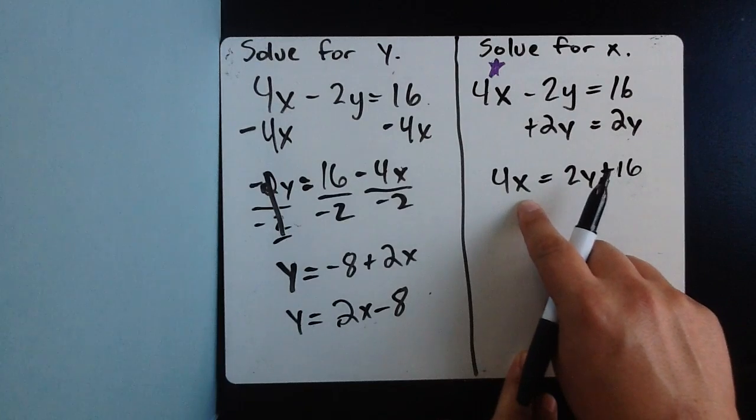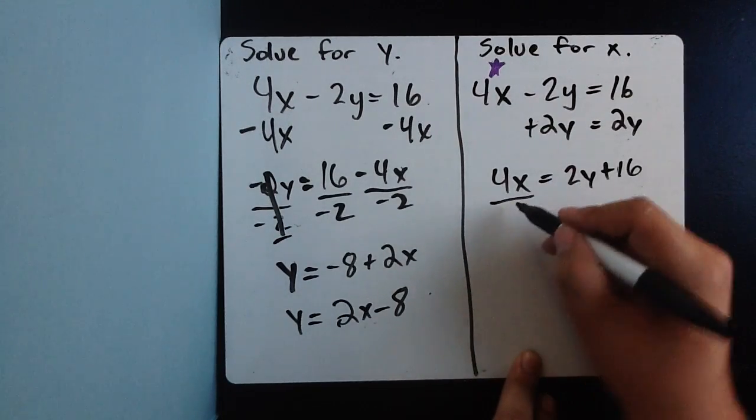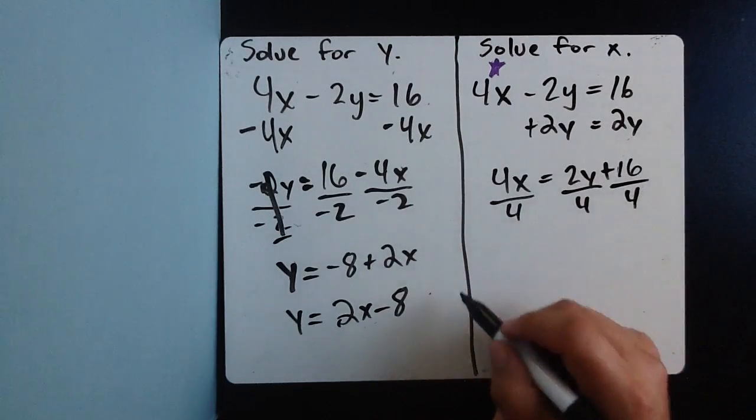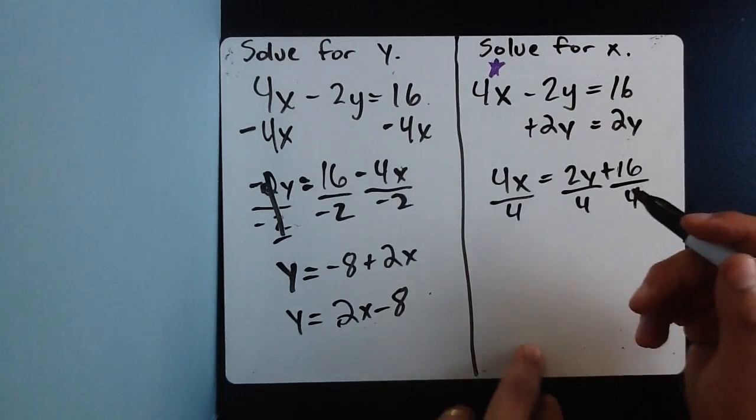Now, I'm almost done. I'm solving for x. So, I'm multiplying x by 4. I undo multiplication by dividing each term, and that's important. Remember, divide each term by 4. You have to do it this way because it'll save you a lot of time and mistakes.